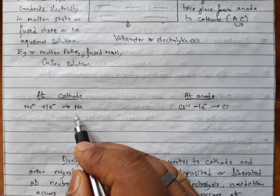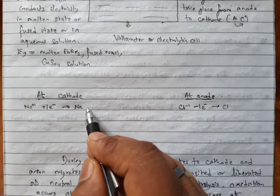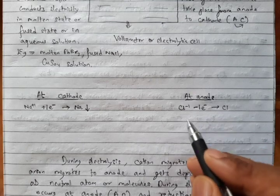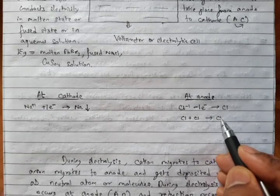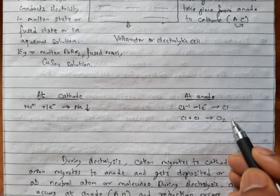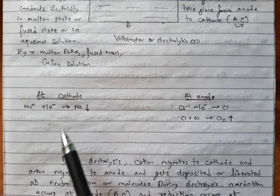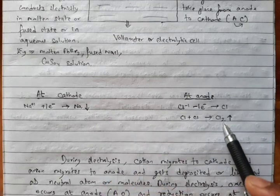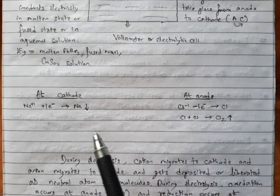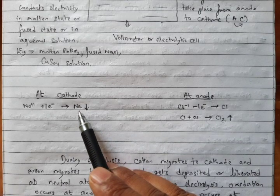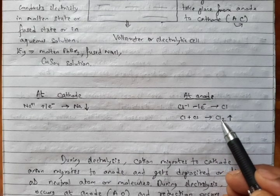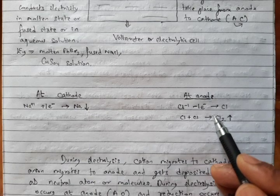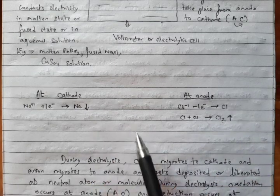During electrolysis, ions get either deposited or liberated as neutral atoms or neutral molecules. Metals usually get deposited as neutral atoms because they are single. Non-metals get liberated as neutral molecules because they form pairs — and both are neutral because there is no charge remaining. At cathode, the gain of electron is occurring. Gain of electron is called reduction. At anode, loss of electron is occurring. Loss of electron is called oxidation.